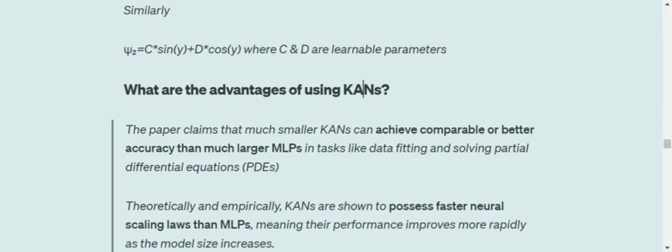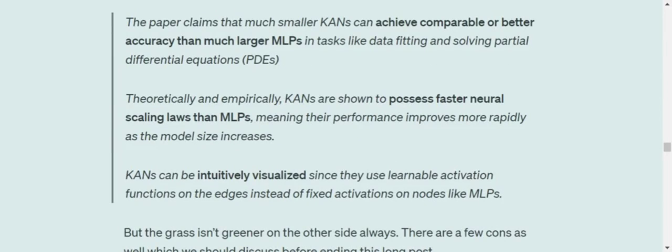Now, what are the advantages of using a KAN? As claimed in the paper, smaller KANs can achieve comparable or better accuracies than MLPs. It does make sense because in a smaller number of hidden layers, now the neural network is able to capture nonlinearity much better as compared to an MLP. KANs are shown to possess faster neural scaling laws than MLPs. This means that as the size of the network increases, the performance improves rapidly.